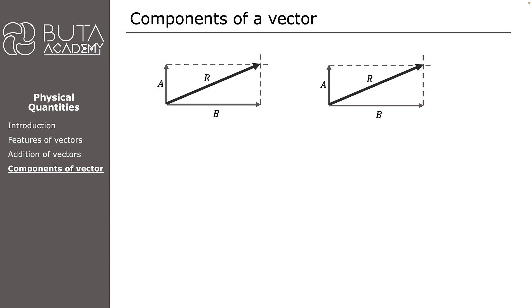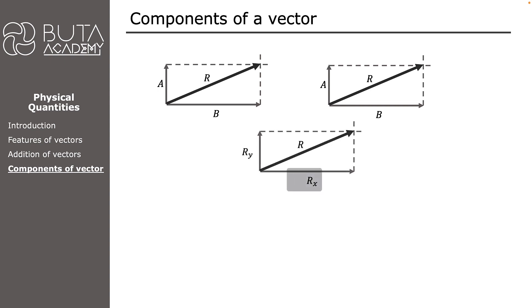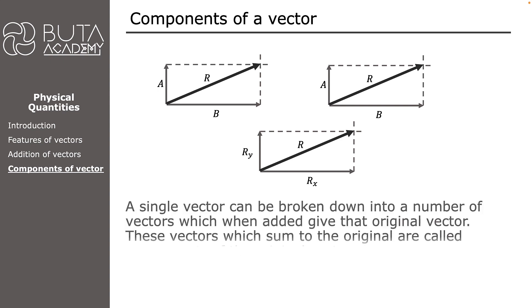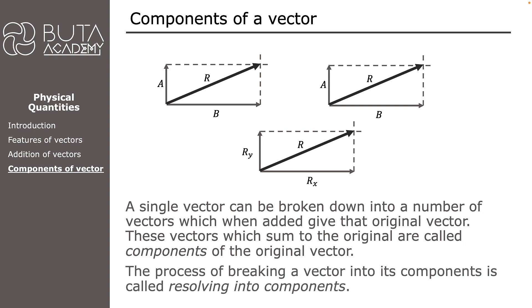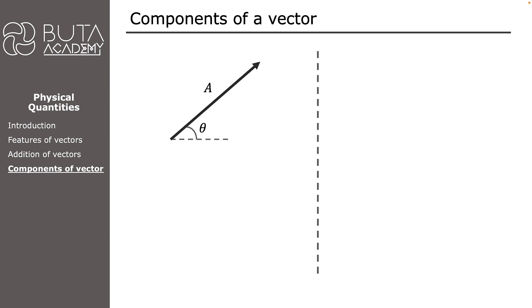Let's redraw the diagram again, but now instead of naming the two vectors as A and B, we will name the horizontal one as RX and the vertical one as RY. These two vectors which were derived from one single vector are called components of the original vector, and the process itself is called resolving a vector into its components.